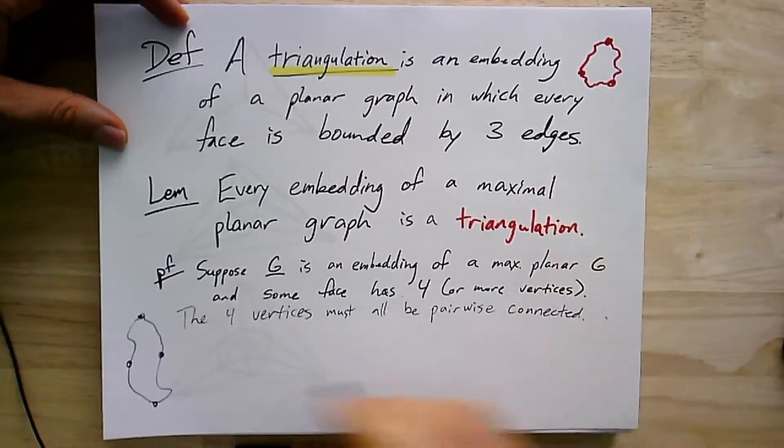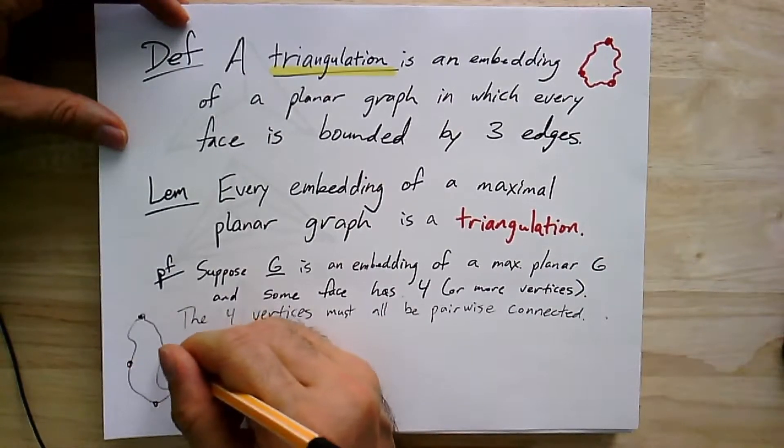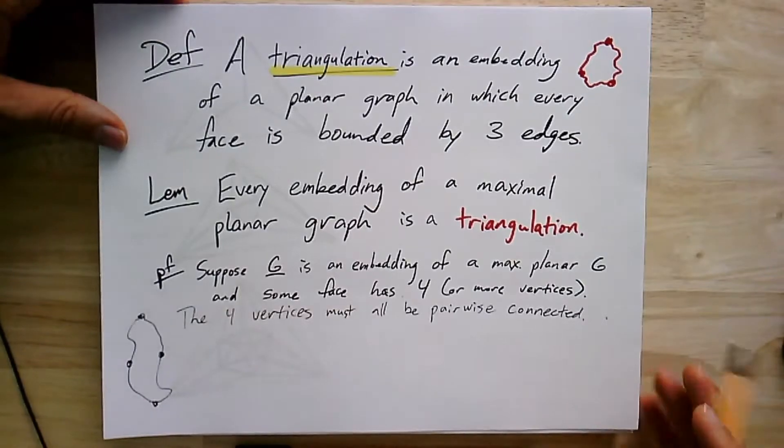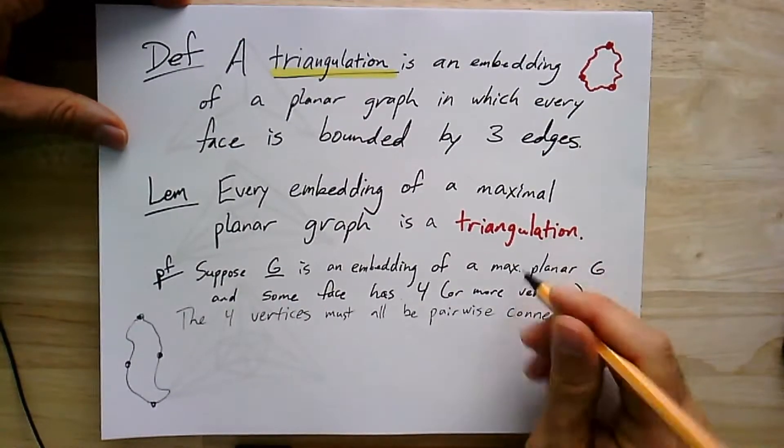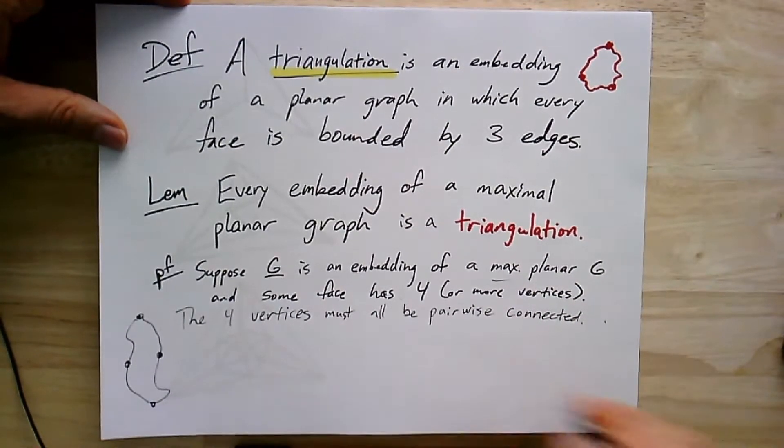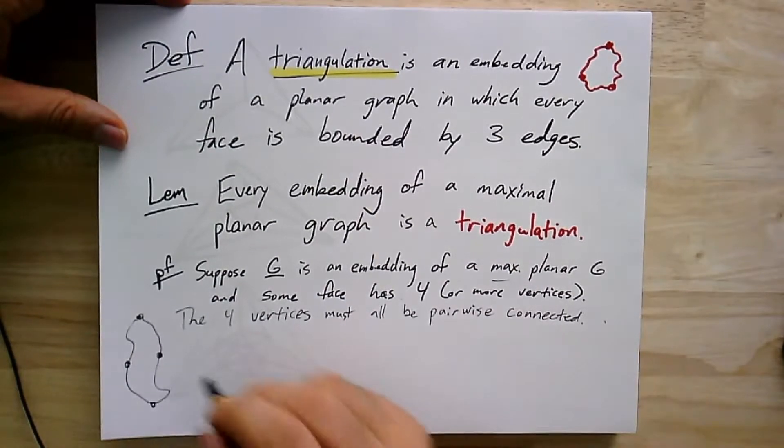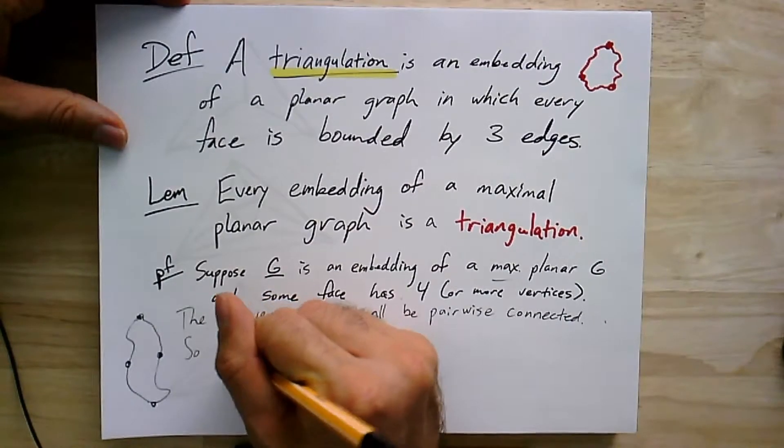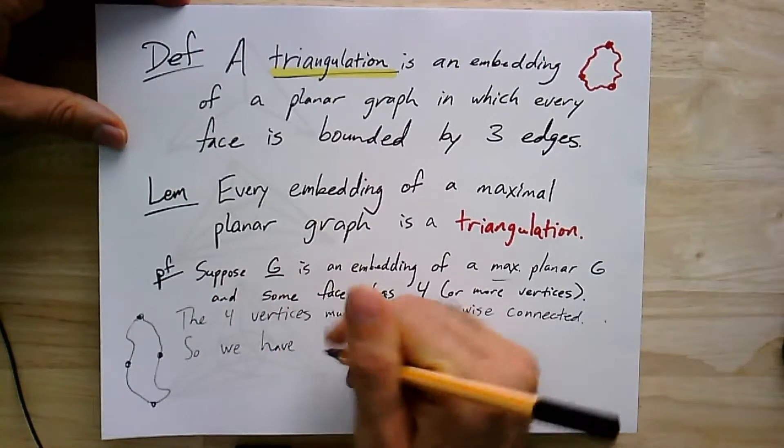And so if I can add an edge across the face without crossing anything else that connects two vertices, then it must not have been maximal. But we assumed it was maximal, so those edges must have already been present. So if I can add an edge across the face, then I would add an edge across the face.